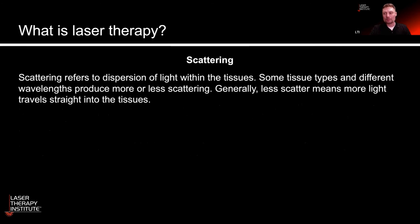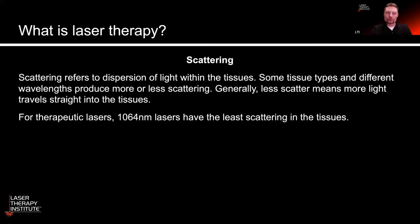I want to talk about scattering, because scattering means you're dispersing light into the tissues, and this can be a good thing because you're getting more dispersion around your laser beam into the soft tissues. Some tissues have more scatter than others — more water-containing tissues have less. Also, 1064 nanometer lasers seem to have the least amount of scattering in the tissues, so in many cases you can get 1064 in fairly deep because it doesn't scatter — it travels more in a linear fashion.